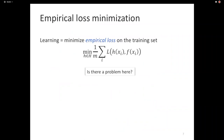We can frame the problem of learning as minimizing empirical loss on a training set. Empirical loss is simply the average — summing the loss over the entire training data and dividing by m, the number of examples.